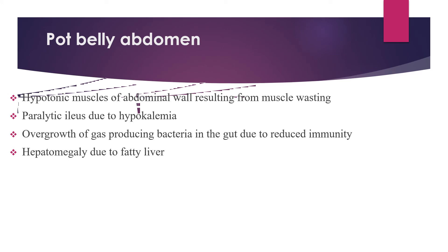Protuberant abdomen is due to four reasons: hypotonic abdominal wall muscles from muscle wasting; paralytic ileus due to hypokalemia, which is a common electrolyte abnormality causing abdominal distension; overgrowth of gas-producing bacteria in the gut due to reduced immunity; and hepatomegaly due to fatty liver.